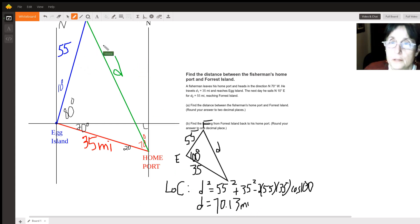So we can replace this D here with 70.13 miles, and that is the answer to part A. I'll use orange, so this is the answer to part A. That's the distance.